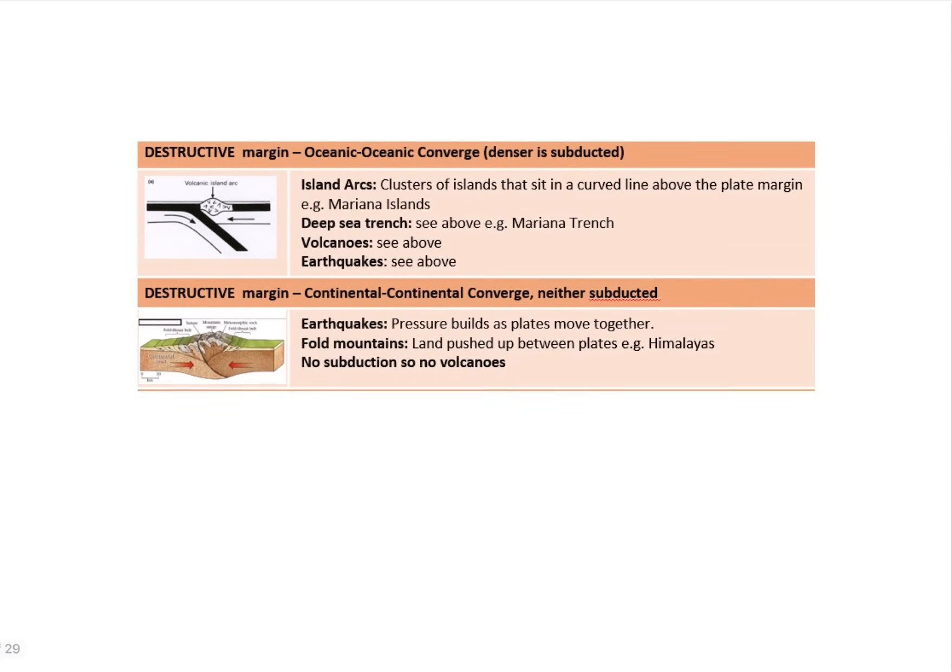If I continue thinking about my oceanic to oceanic convergence, also a destructive margin, I'm going to get island arcs—clusters of islands that sit in a curved line above the plate margin, deep sea trenches, and again, volcanoes and earthquakes.